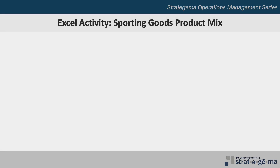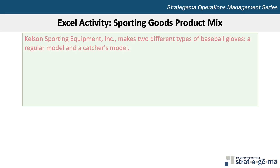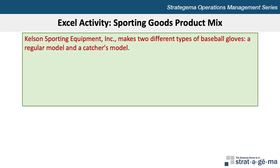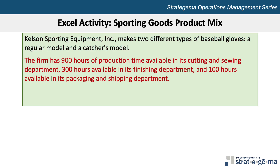Here's the data for our problem. Kelsil Sporting Goods Equipment Inc. makes two different types of baseball gloves: a regular model and a catcher's model. The firm has 900 hours of production time available in its cutting and sewing department, 300 hours available in its finishing department, and 100 hours available in its packaging and shipping department.